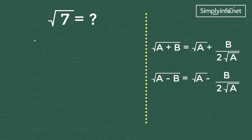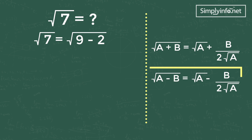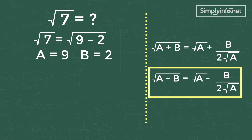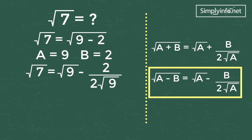The problem is root 7. I am writing the equation as root of (9 − 2) — nothing wrong in it because 9 minus 2 equals 7. Now we can apply our formula: root of (a − b) = root a minus b divided by 2 root a. Here a is 9 and b is 2, so the equation becomes root 7 = root 9 minus 2 divided by (2 × root 9).